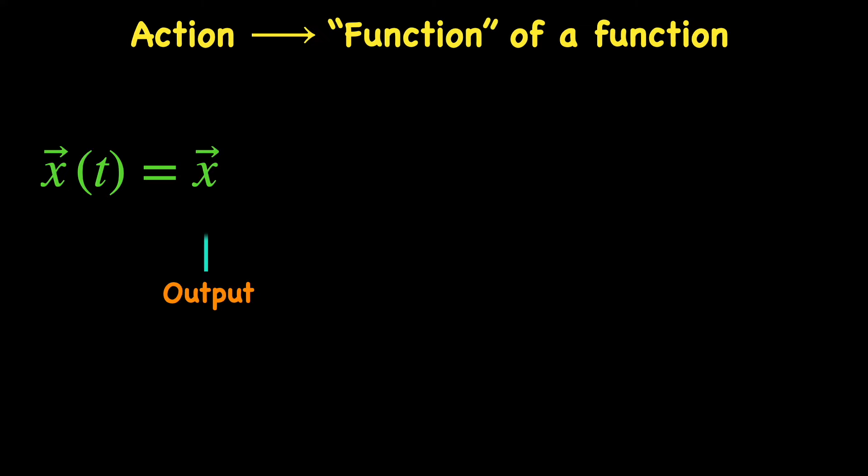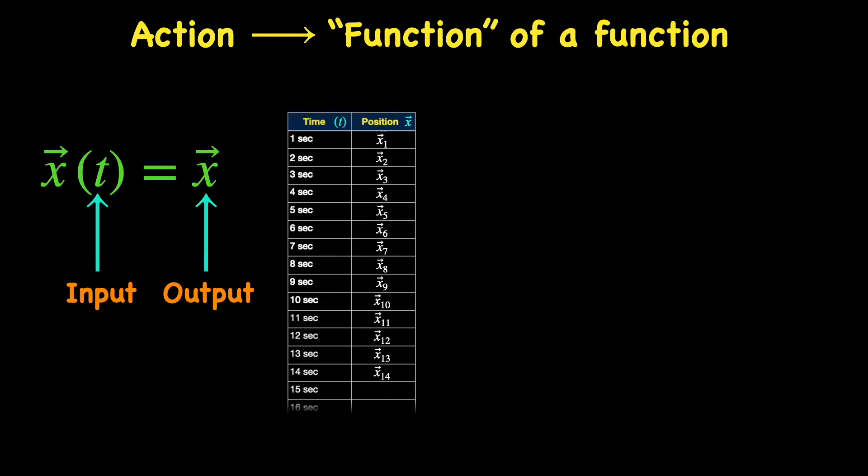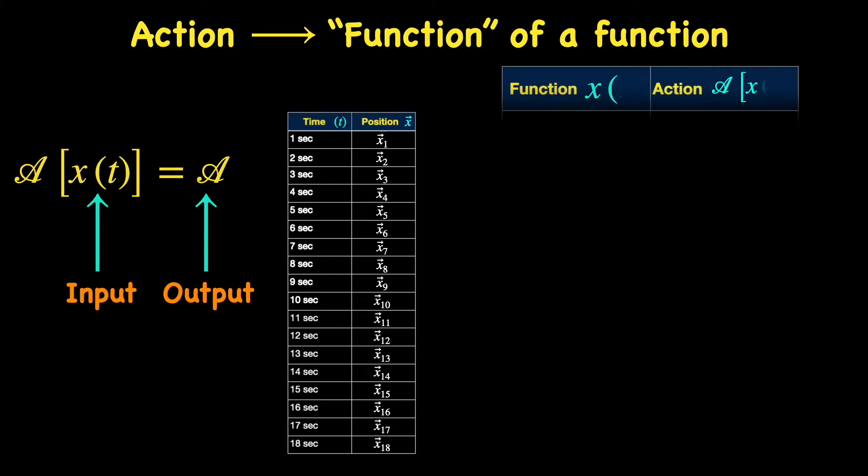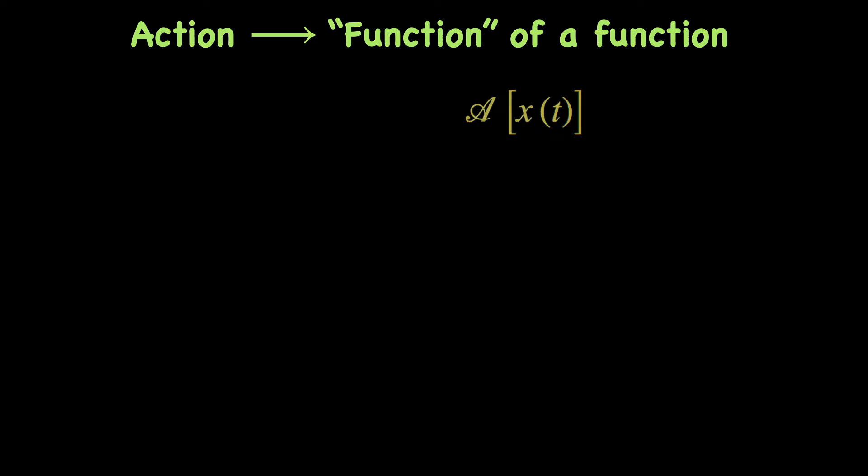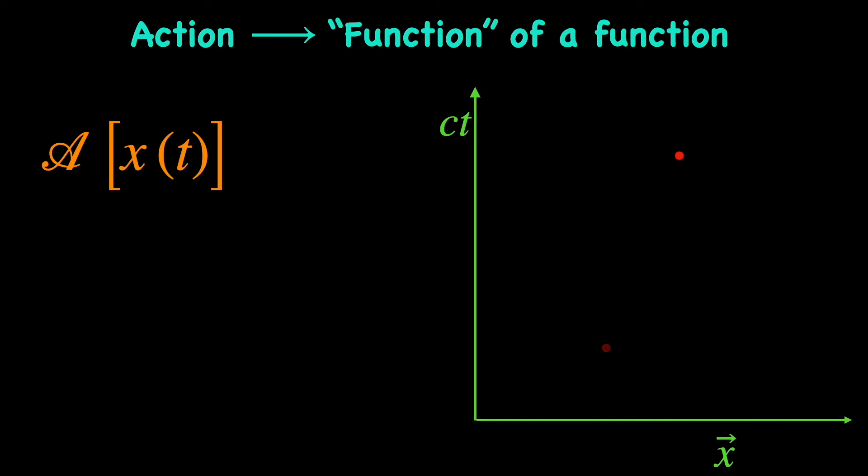In this sense we call the action the function of a function, since like the function x(t) generates a number, a value of x for a given value of time t, similarly the action generates a number, a value for itself for a given function x(t). Of course this value also depends on the initial and final locations, that is if these are changed so does the value of the action.